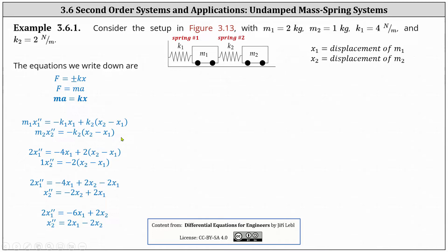From here we substitute the given values: for the first equation, m one equals two, k one equals four, k two equals two; and for the second equation, m two equals one and k two equals two. We then simplify the right side of both equations and combine like terms, resulting in: two x one double prime equals negative six x one plus two x two, and x two double prime equals two x one minus two x two.